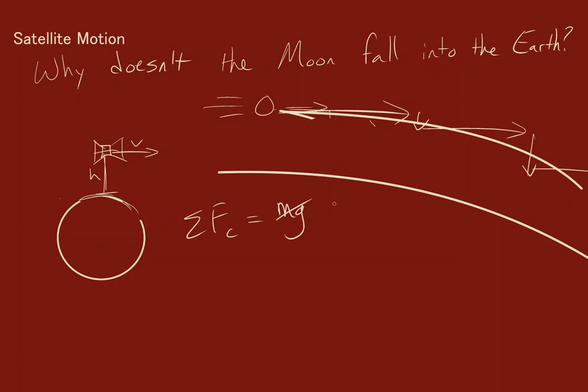...our gravitational constant times the mass of the earth and the mass of the satellite over the distance from their centers of mass. In this case, we would also want the radius of the earth here. We don't really care about the radius of the satellite—that would be small compared to the scale that we're on.